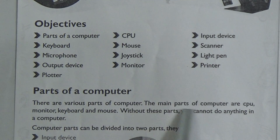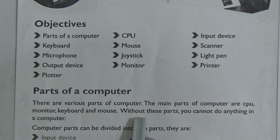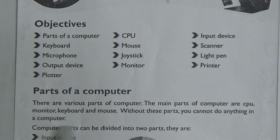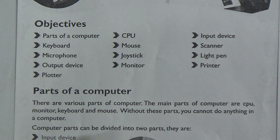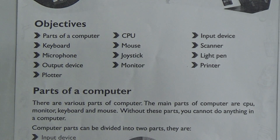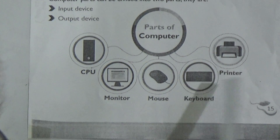There are various parts of a computer. The main parts of a computer are CPU, monitor, keyboard, and mouse. Without these parts, we cannot do anything on a computer. Computer parts can be divided into two main parts: input device and output device. There are pictures of parts of a computer — CPU, monitor, mouse, keyboard, and printer.